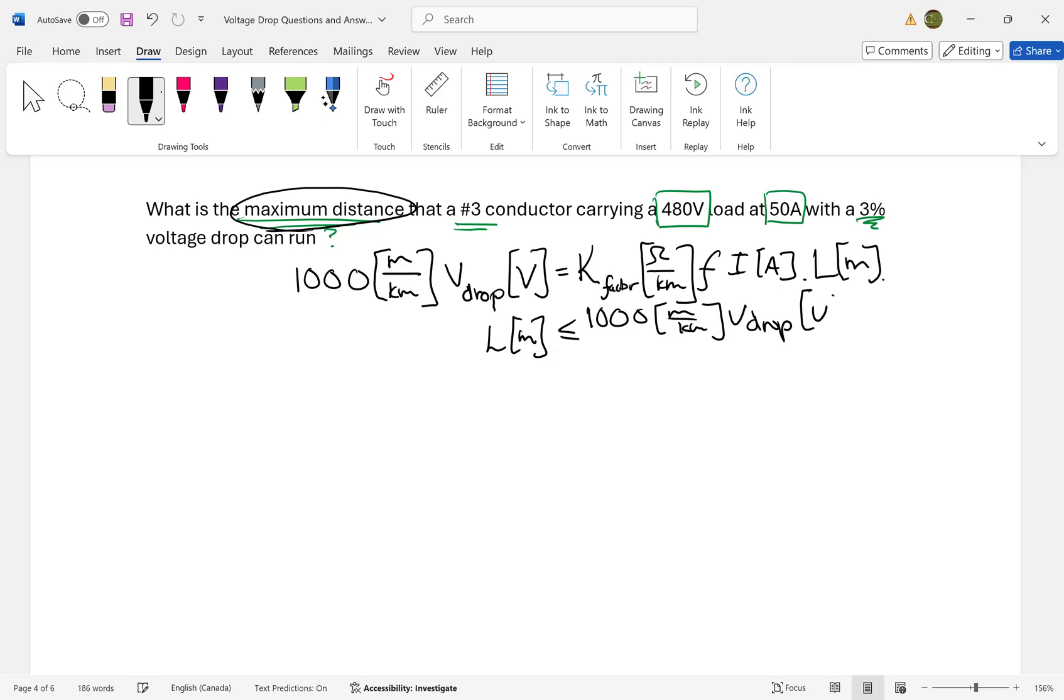I'm not changing anything, just rearranging. Now I can substitute in all the values. Units are important, so I'm keeping them throughout. Voltage drop equals my voltage in volts times the percent drop.